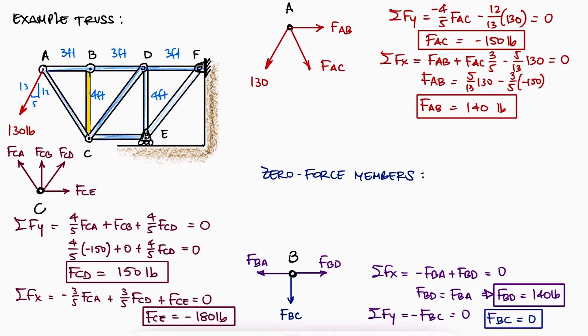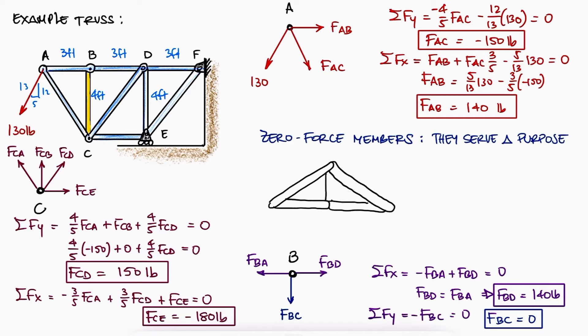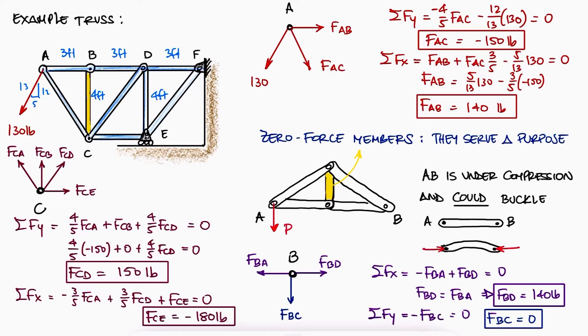However, in most cases, these zero force members are still there for a reason. It can be providing extra support that comes from the fact that members under compression can buckle, which means the members themselves are effectively bending, so to prevent that bending, a zero force member is added.